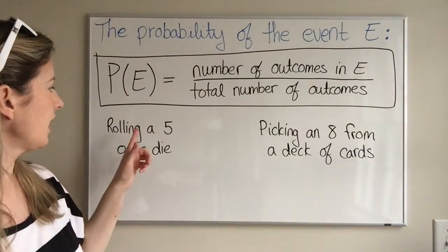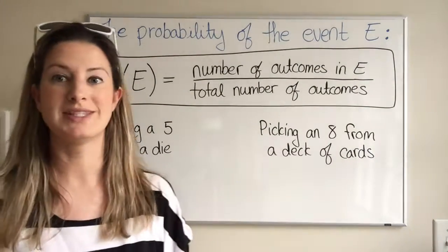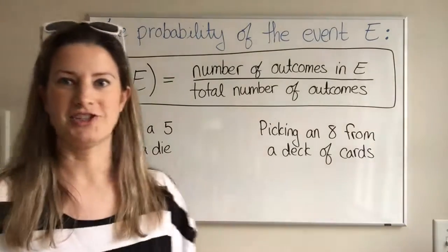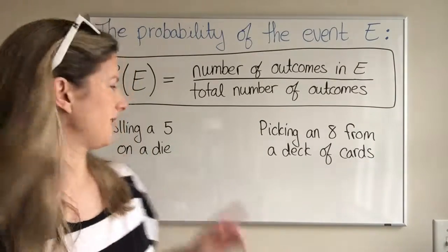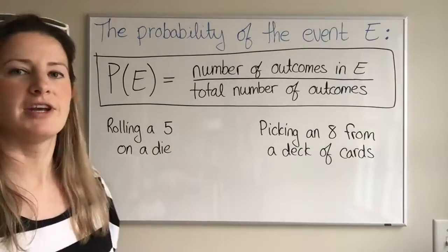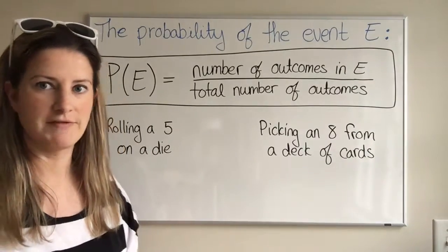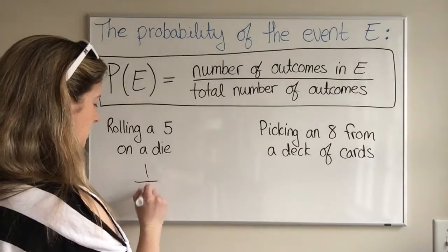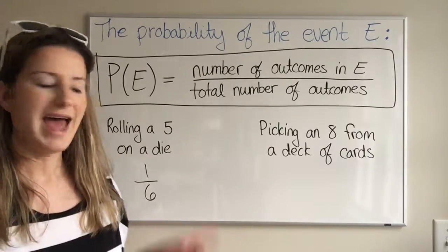Rolling a 5 on a die—we're assuming it's a six-sided die with numbers one through six. If I asked you what's the probability of that, you would say 1 over 6. Now think about that.